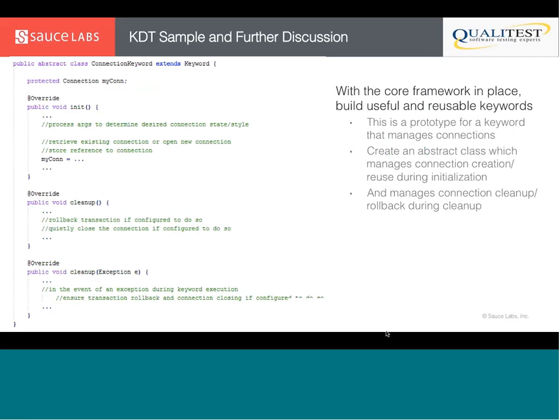When you actually want to make keywords, once you've got the core framework in place you can start building mini keyword frameworks. What you see on screen is the scaffold for an abstract keyword that would manage connection creation and reuse — for example, managing database connections. When it comes time to implement a real keyword that does something with the database, that keyword doesn't have to do all the connection management. It doesn't need to check if a connection is open or open a new one — all of that is handled in the abstract keyword.